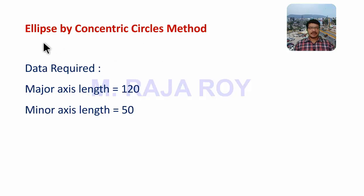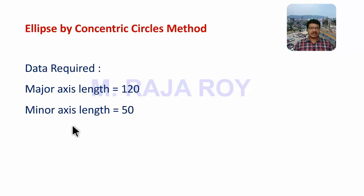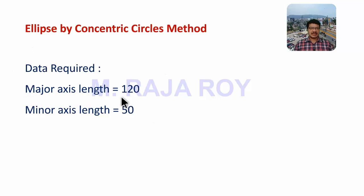In this video, I am going to explain the concentric circles method. For following the concentric circles method, the data required is major axis length and minor axis length. To demonstrate this method, I am taking the major axis length as 120 and minor axis length as 50.